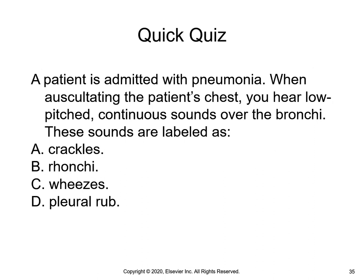A patient is admitted with pneumonia. When auscultating the patient's chest, you hear low-pitched, continuous sounds over the bronchi. These sounds are labeled as crackles, bronchi, wheezes, or pleural rub. The answer is B, bronchi. Ronchi are loud, low-pitched, rumbling, coarse sounds heard during inspiration or expiration and may sometimes be cleared by coughing. Ronchi are routinely caused by muscular spasms, fluid, or mucus in larger airways. A new growth or external pressure may cause turbulence.